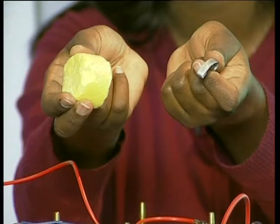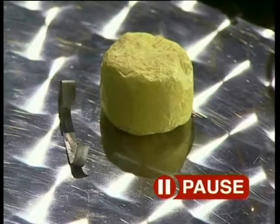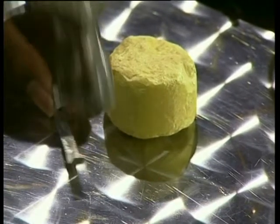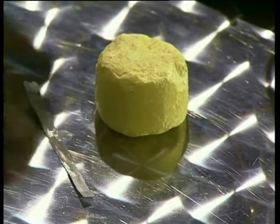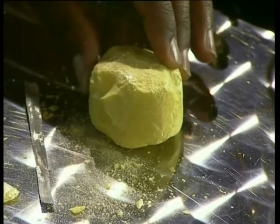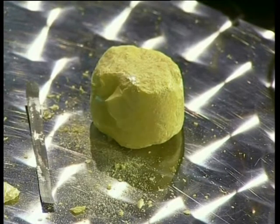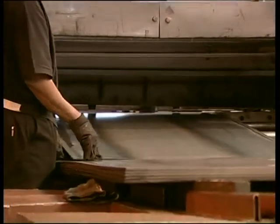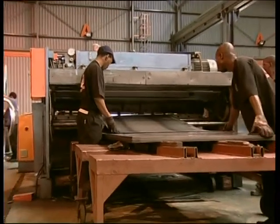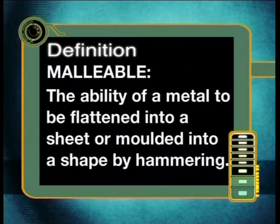For our next experiment, we will take some zinc, which is a metal, and a lump of yellow sulphur, which is a non-metal, and gently hammer them. Can you predict what will happen? Look carefully at how the metal flattens when I hammer it. Now watch what happens as I hammer the sulphur. Do you see that the substance shatters into small pieces? We say that this non-metal is brittle. So a property of metals is that they can be hammered flat or rolled into a sheet. We say that metals are malleable — the ability of a metal to be flattened into a sheet or moulded into a shape by hammering.